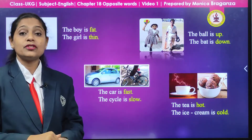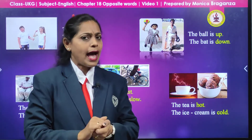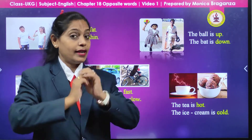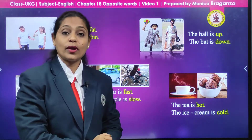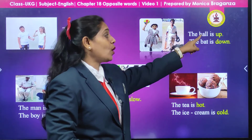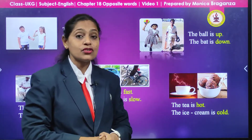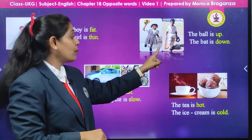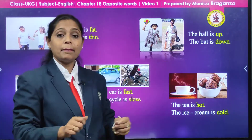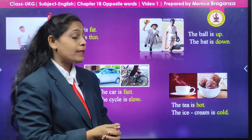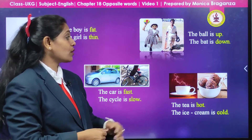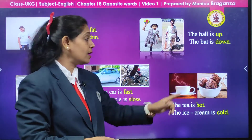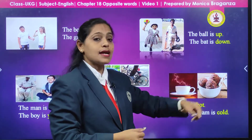Here we are having a picture of a boy and a girl. The girl is holding a ball in her hand — where is the ball? She is holding it up, so the ball is up. Same way, the boy is having a bat in his hand and where is the bat? It is down, so the bat is down.